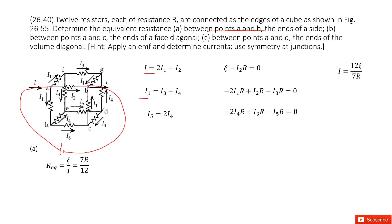Next, at position D, the current entering is I5 and the current leaving is I4 plus I4. Now we apply Kirchhoff's loop rule. The first loop goes from the battery through the resistor and back — voltage increases at the battery and decreases through the resistor — giving minus I2·r equals zero.